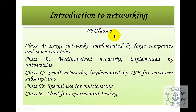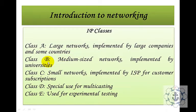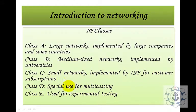There are different types of IP classes: Class A, B, C, D, and E. Class A is for large networks implemented by large companies and some countries. Class B is for medium-sized networks implemented by universities. Class C is for small networks implemented by ISPs for customer subscriptions. Class D is for special use in multicasting. Class E is used for experimental testing.